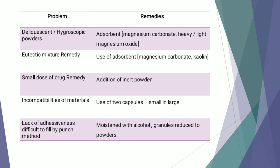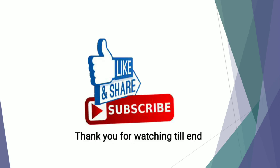Some other problems during capsule filling include: deliquescent or hygroscopic powder — remedy is to add proper adsorbents; eutectic mixture — again use proper adsorbents; small dose of drug — inert material has to be added; incompatibilities of the material — use two capsules, one large and one small; and lack of adhesiveness leading to difficulty filling by the punch method — overcome by moistening with alcohol and reducing granules to powder.